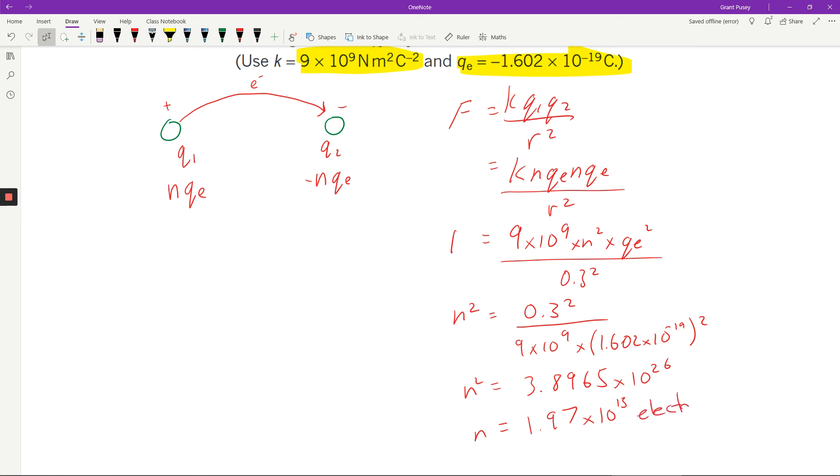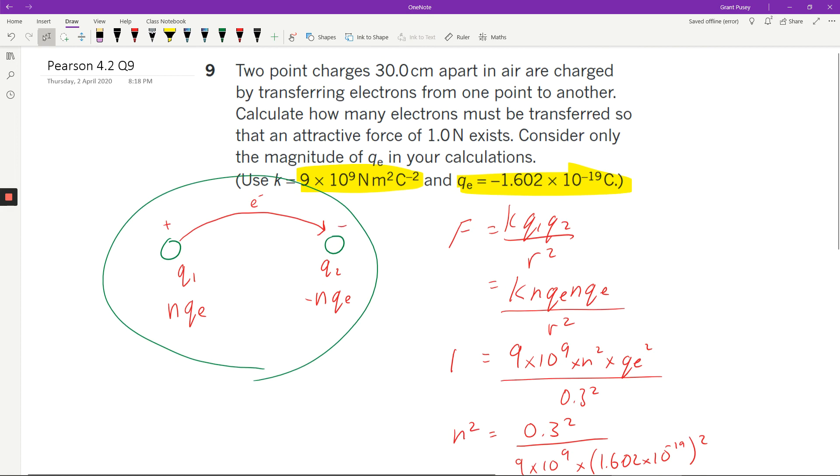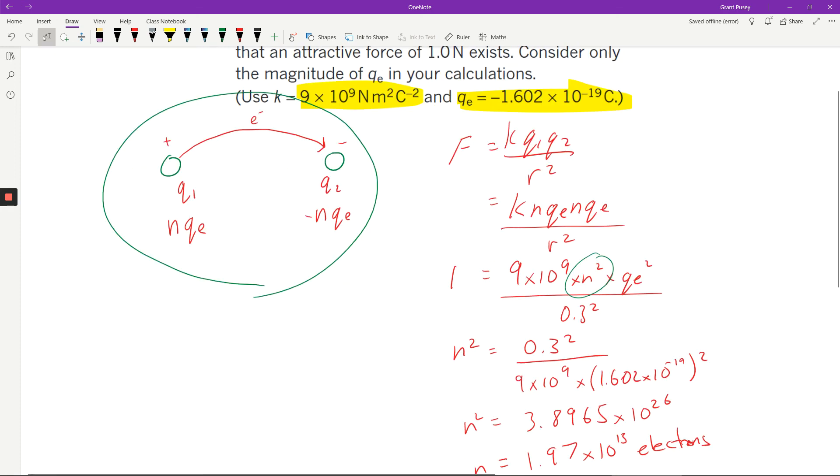And I think the difficulty in this question would be actually just coming up with this bit here. It's getting what it says in the question and saying, okay, well, if I'm building up charge by transferring electrons across, then it will be N times that charge on this side, and N times the charge on this side, which gives us this N squared value. And that might be where a few people have been slipping up.